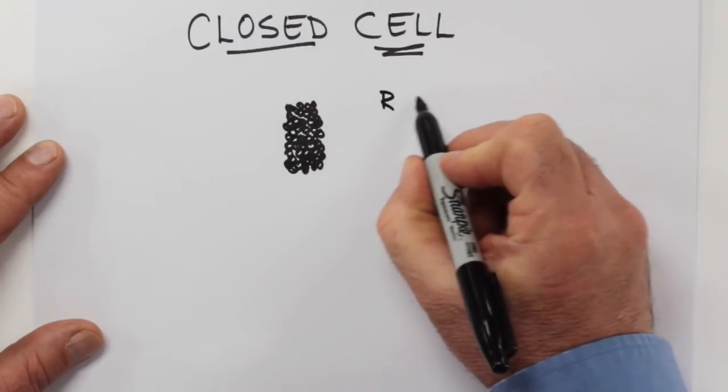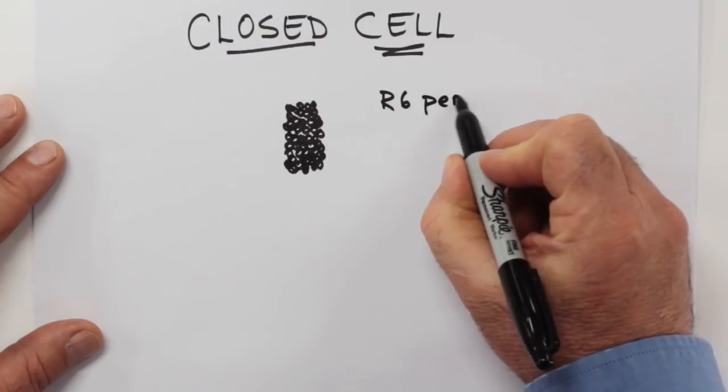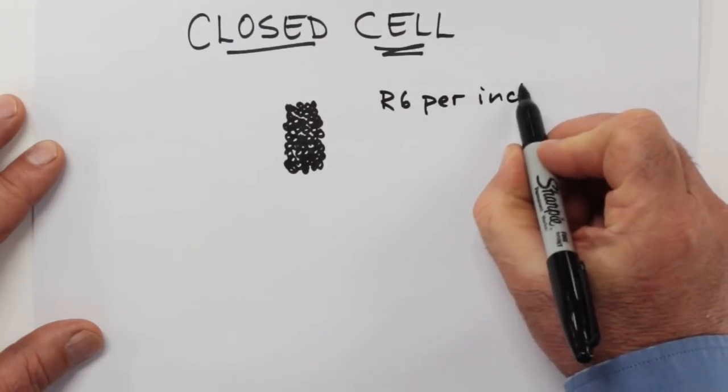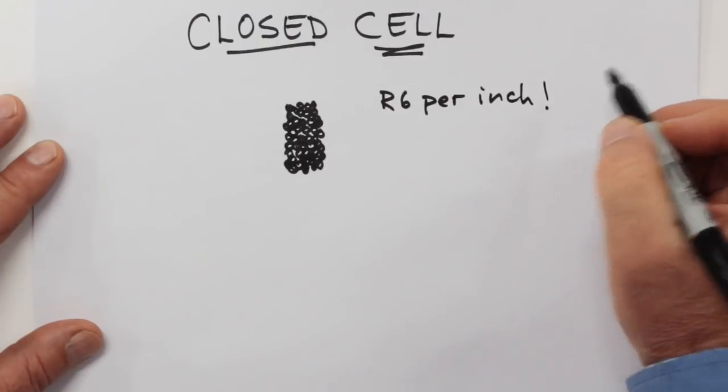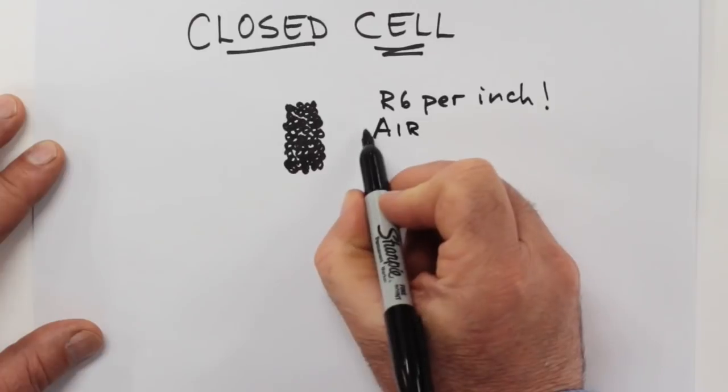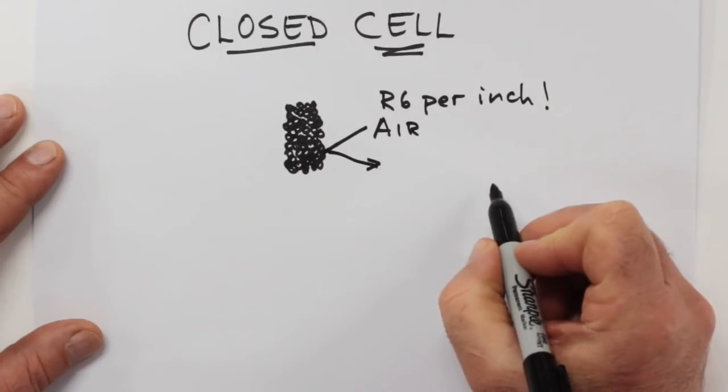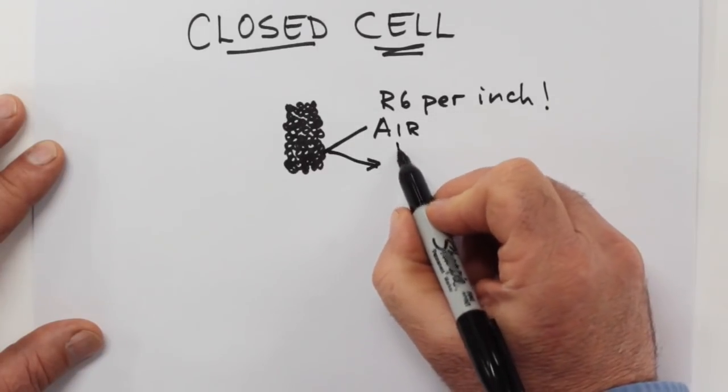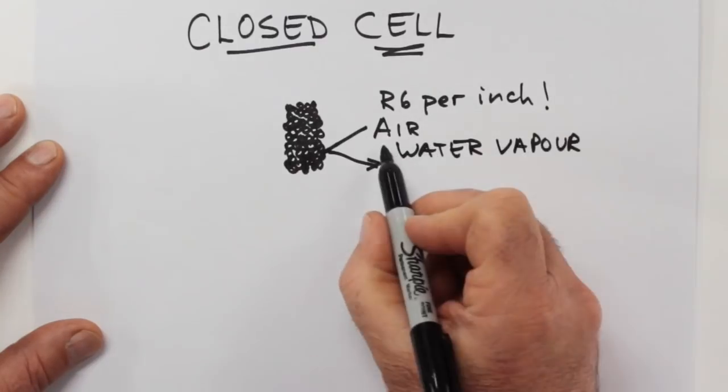Besides the fact that closed cell foam delivers on average a whopping R6 per inch and the fact that it can block air movement completely, so drafts and air leakage of all kinds, the ability to block water vapor is a hidden and really useful feature.